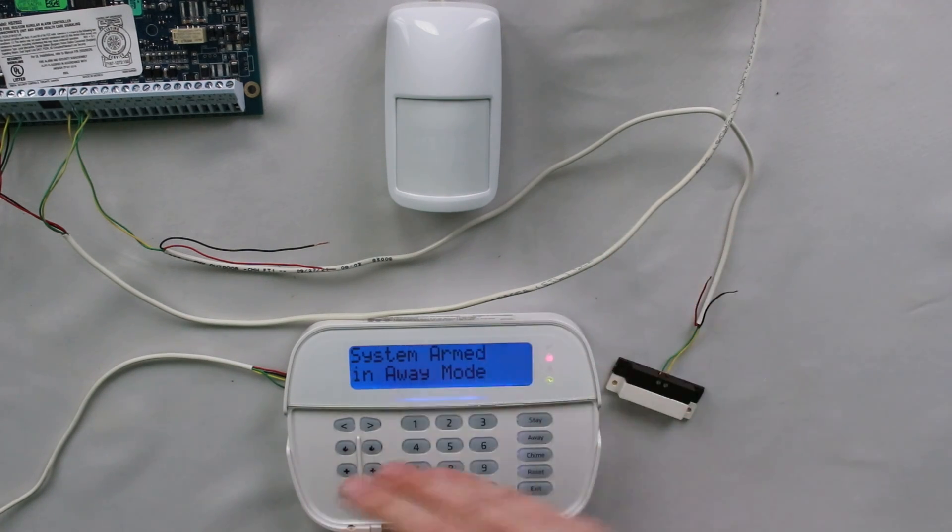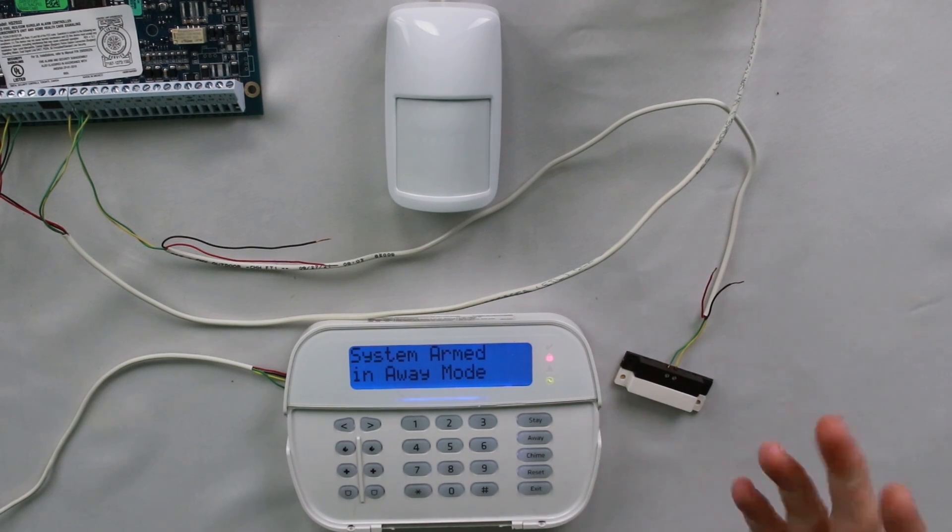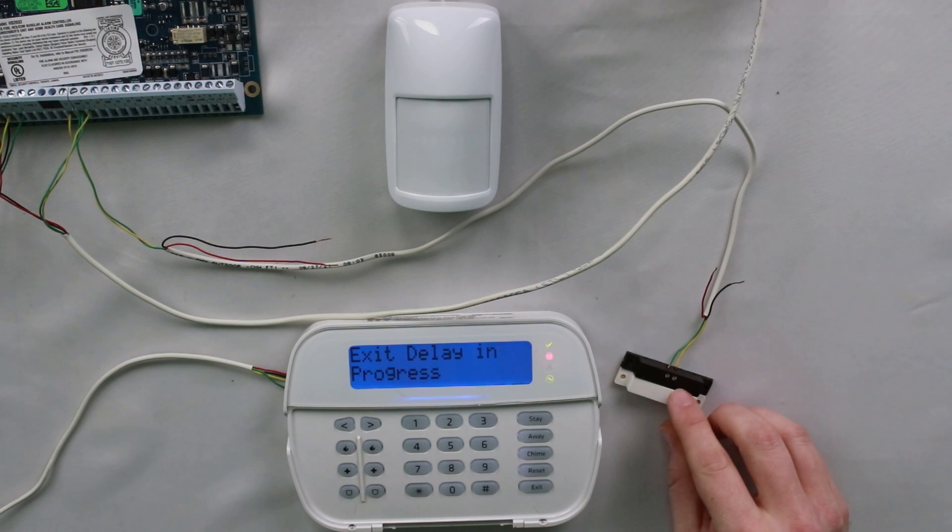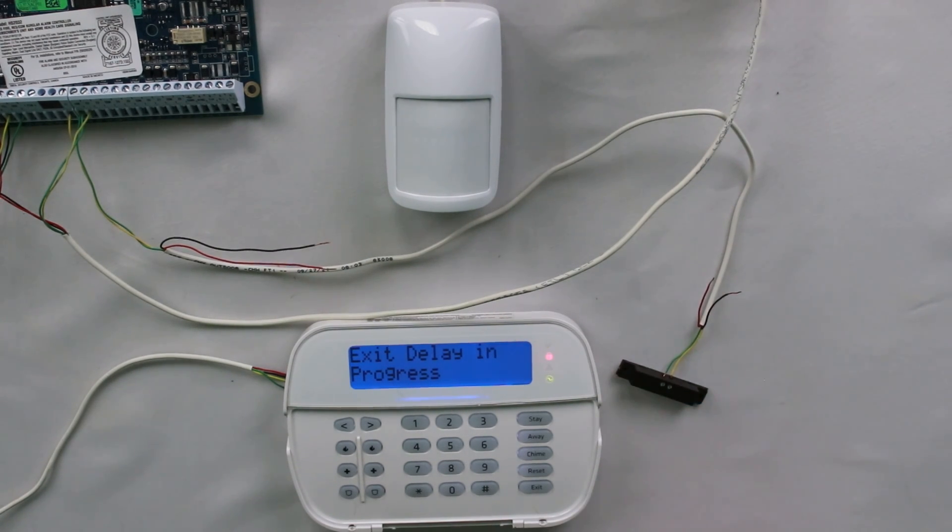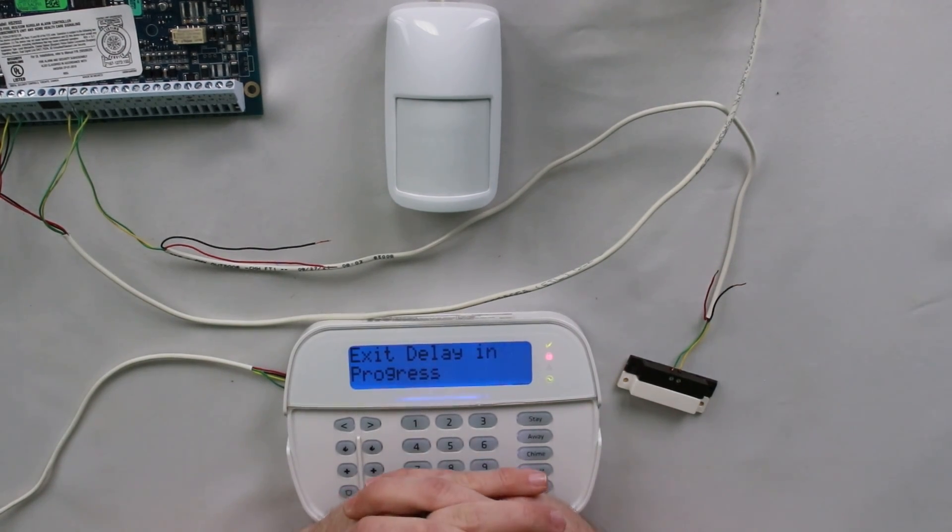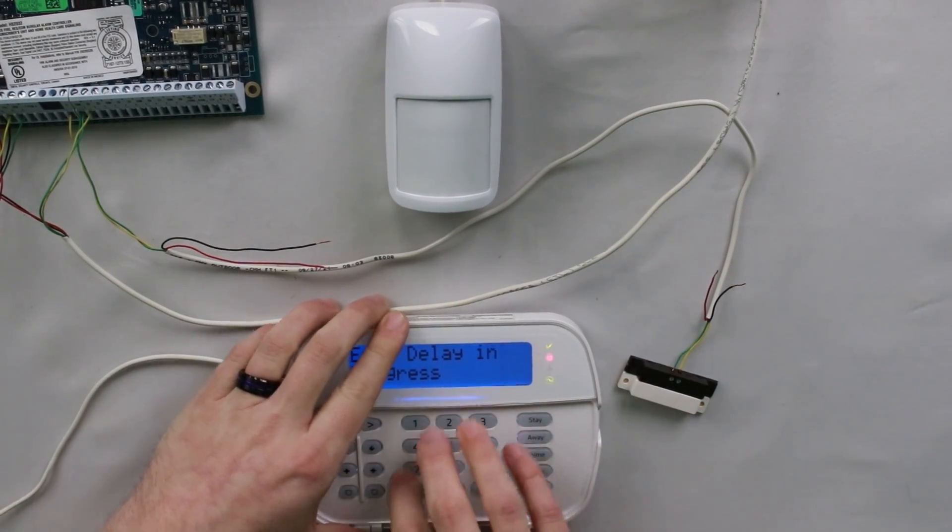So as you can see, it says system armed in away mode. There's no other options because everything's active, which is just going to be your instant windows and your delay door or your entry exit doors. So now if I arm it and I do open that delay door, it's not going to do anything. It's basically going to stay the same setup. It's going to allow you to leave, do your thing, but it's still going to arm in away mode. And that's basically just because it doesn't have to arm in stay mode for any reason whatsoever. It doesn't have to worry about any sensors that need to be bypassed.